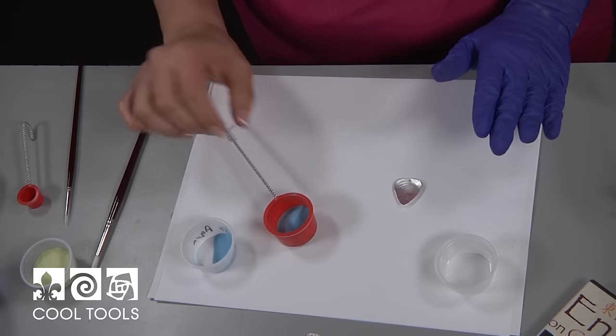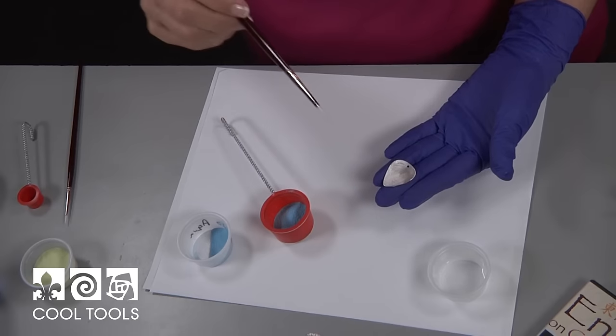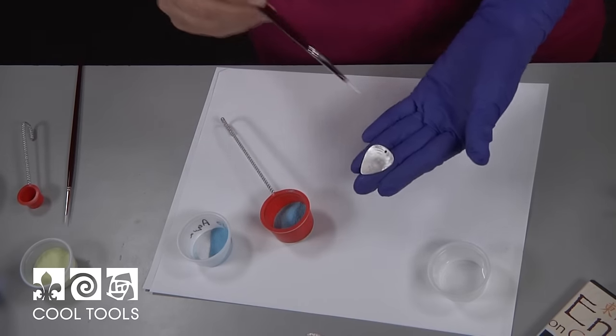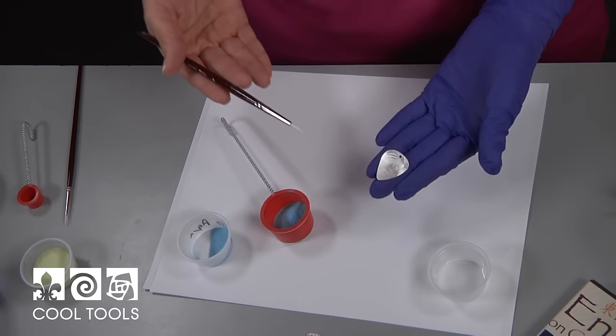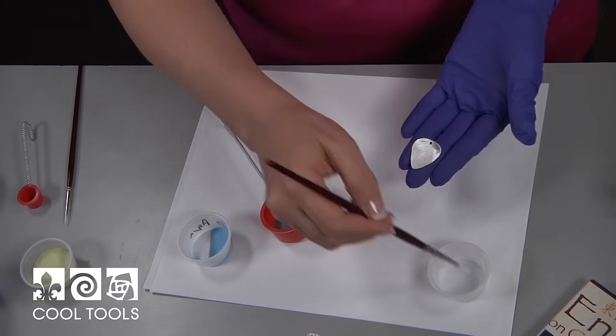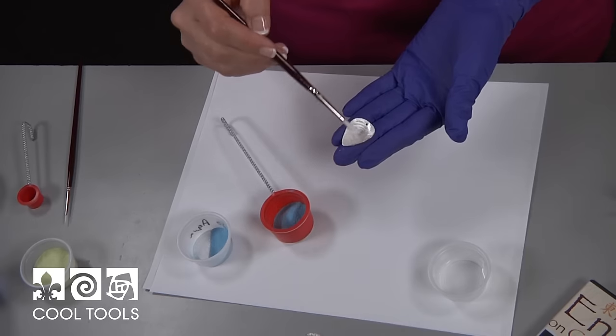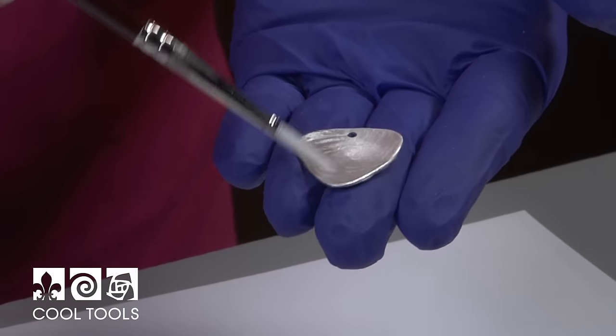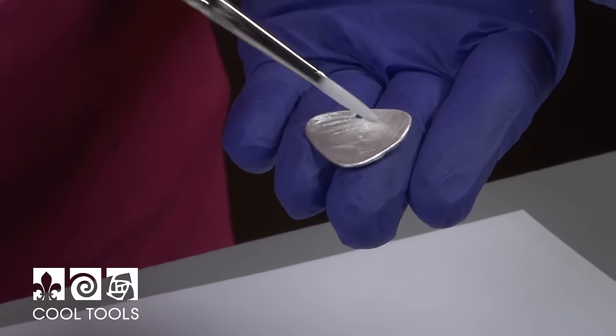Only fill the sifter about a third full. If you fill it too full, it won't sift out well. I've already cleaned these pieces to prepare them for enameling. I'm wearing a glove so that I don't get my finger oils on the front of the piece. I'm going to apply some clear fire to the back. This is where my counter enamel is going, and I'm going to be pretty generous with it.